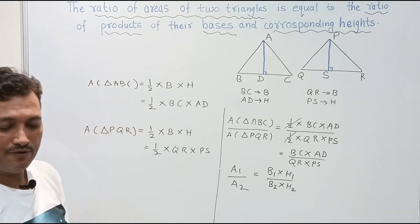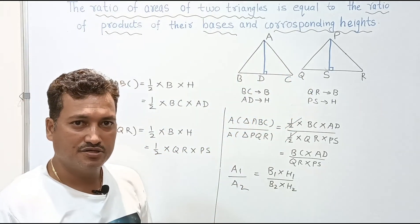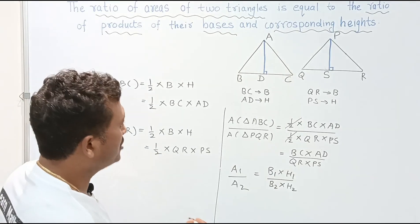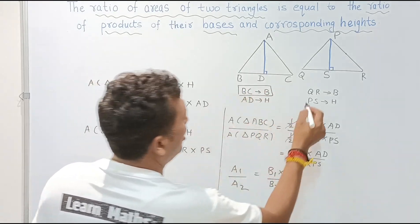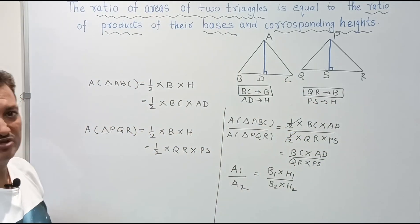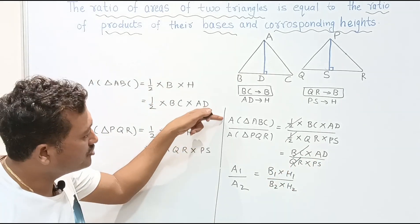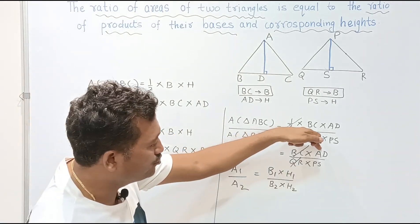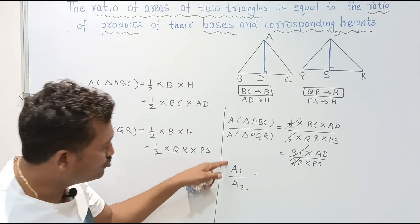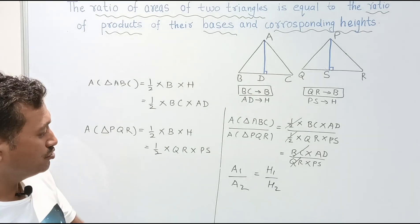Now suppose the bases of both triangles are equal, that means BC equals QR. If BC and QR are equal, they cancel out, so area of triangle ABC upon area of triangle PQR equals AD upon PS. Therefore, when two triangles have equal bases, the ratio of their areas equals the ratio of their corresponding heights.